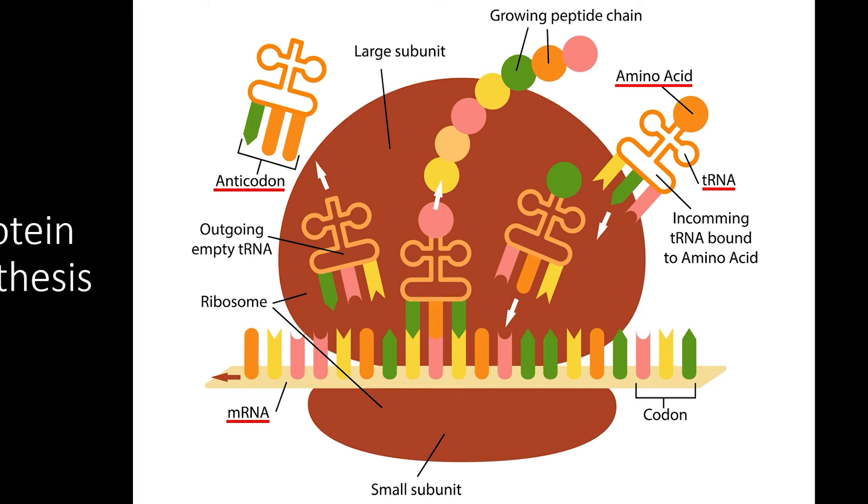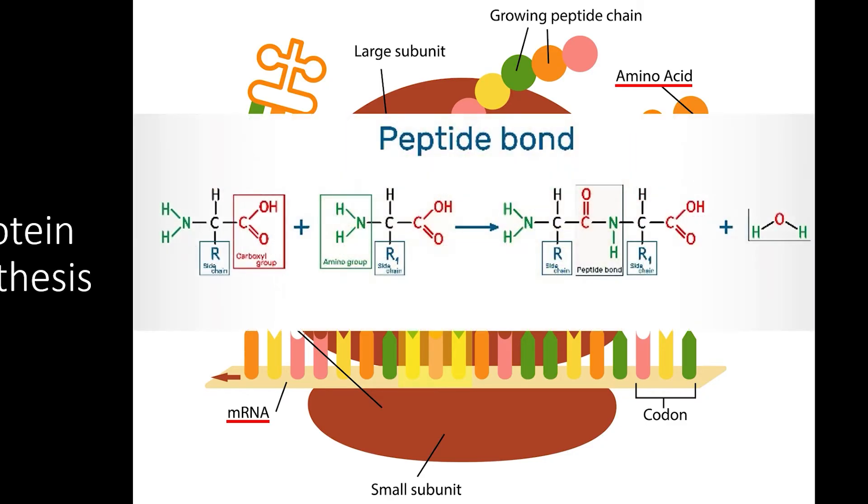The tRNAs move into the ribosome. If the anticodon can form hydrogen bonds with the codon on the mRNA molecule, the amino acid carried by the tRNA will be added to the growing polypeptide chain. The used tRNA molecule exits the ribosome, where it returns to the cytosol to be recycled. This process relies on the directionality of both the mRNA molecule and the new polypeptide chain to ensure that the amino acids are placed in the exact right order.